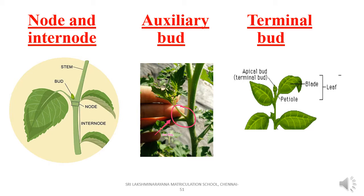The part of the stem between two successive nodes is called an internode. That is, the region between one node and another node is called an internode. The bud that is present in the axil of a leaf is called an axillary bud.